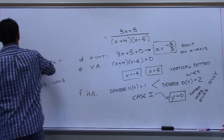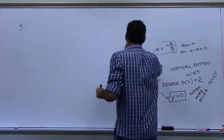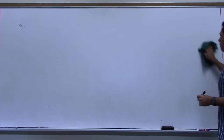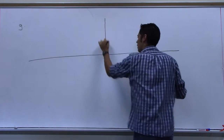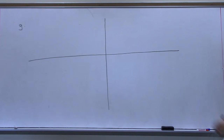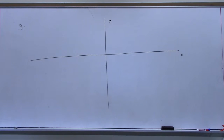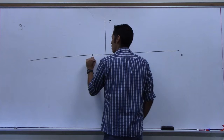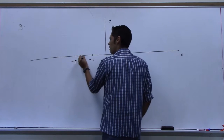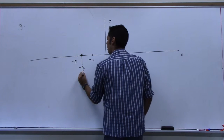For Step G, I'll give myself plenty of room. The first piece of information was an x-intercept at negative five-thirds. That's between negative one and negative two, so it goes somewhere around here on the graph.